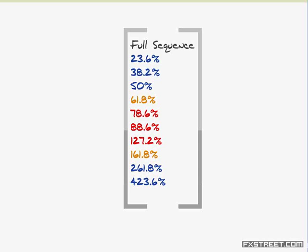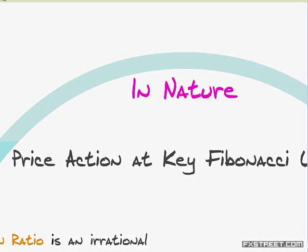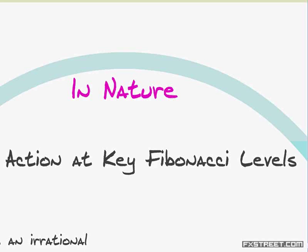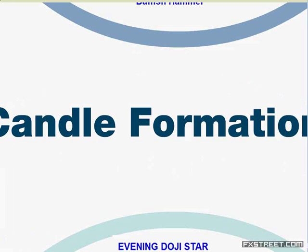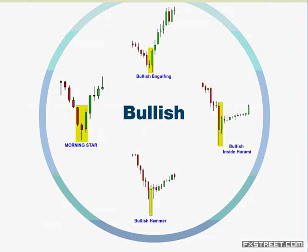One thing we need to look for at Fib levels is price action — by which I mean candlestick formations. The prime candlestick formations are reversal patterns. The prime reversal patterns I look for are the bullish engulfing formation and the bullish inside bar (Harami). I find these two formations to be the best for reversals or corrections, along with the morning star and the bullish hammer.